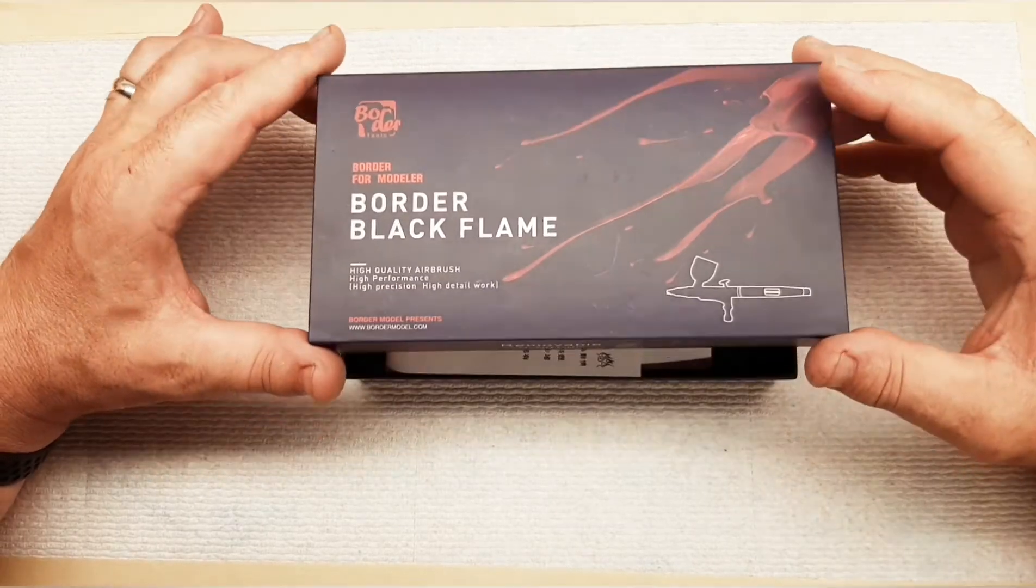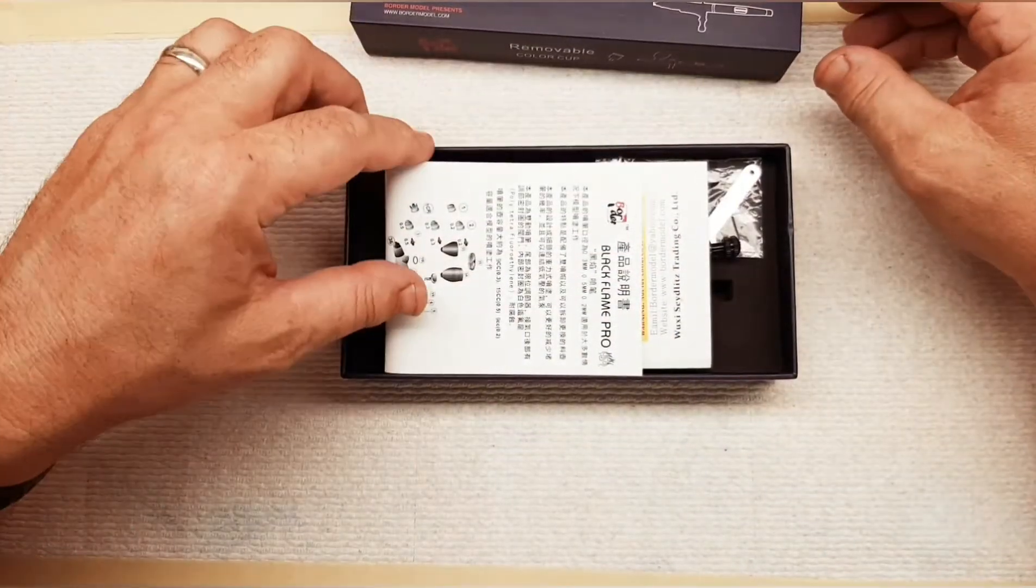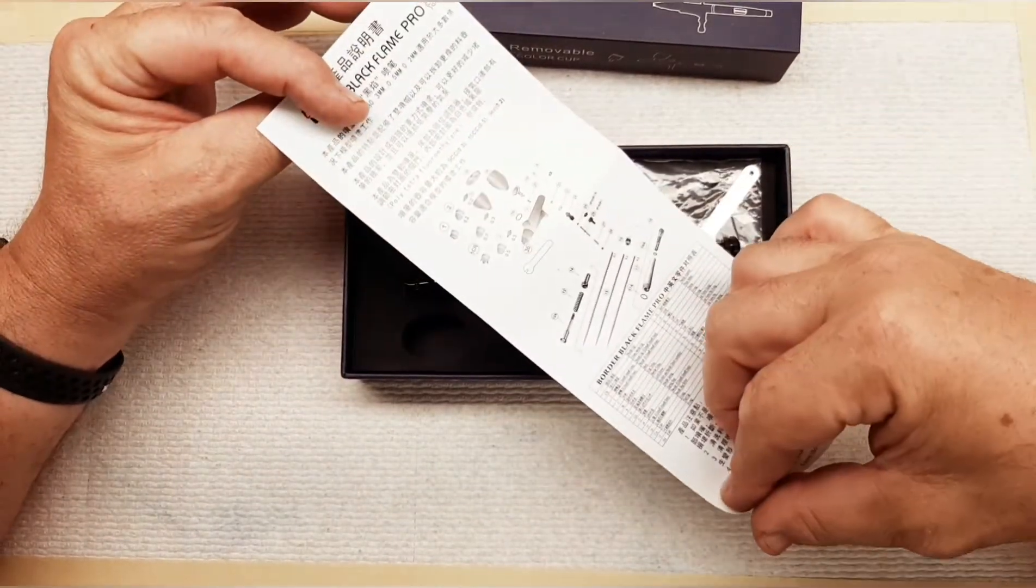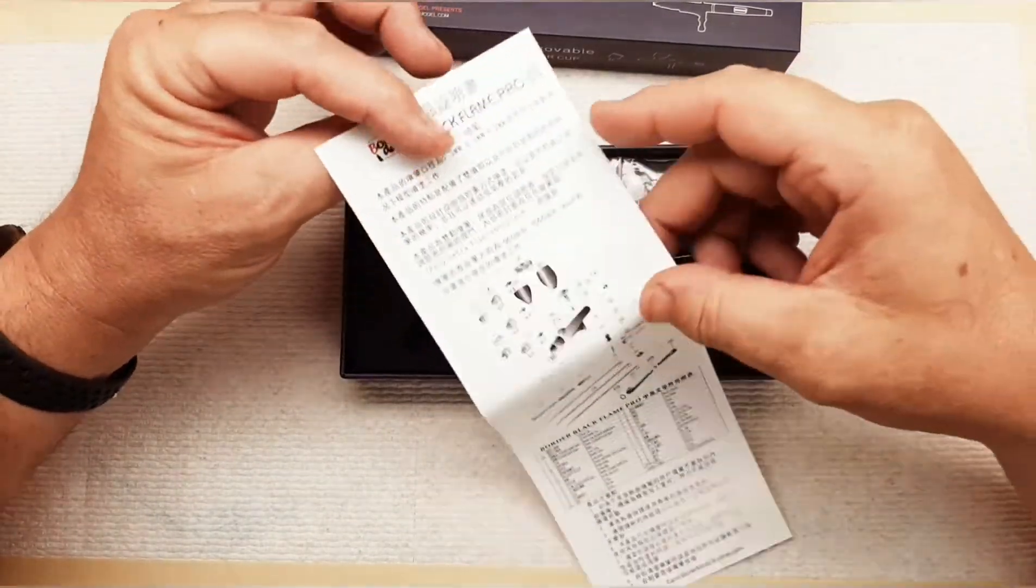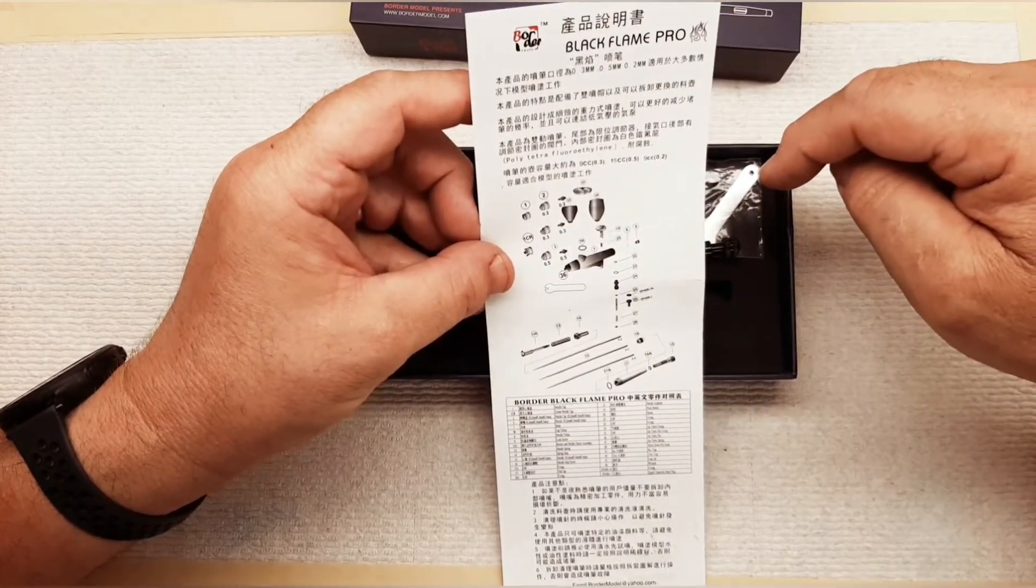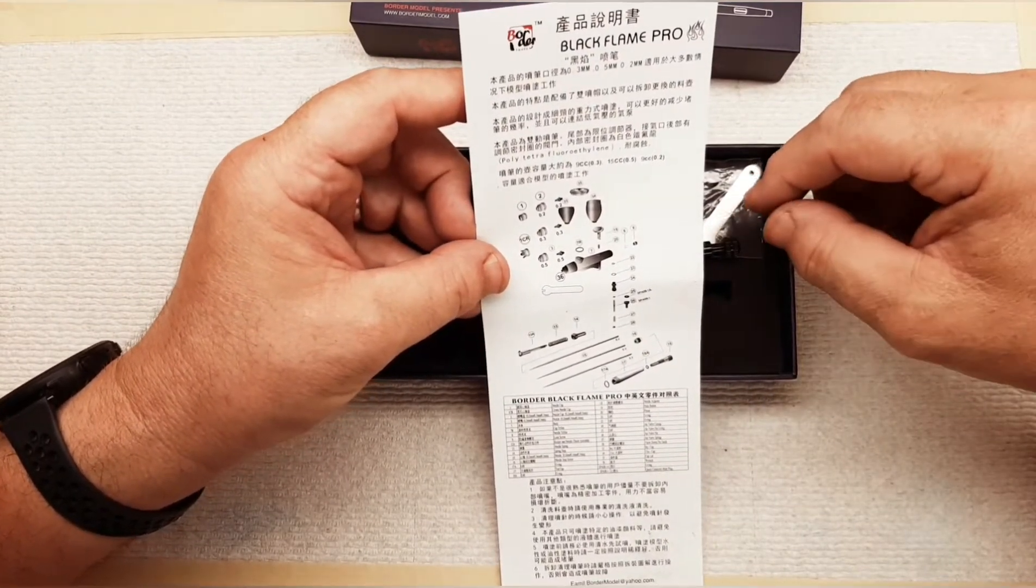It comes in a pretty heavy-duty box, no big deal there. Instructions are very limited and have a lot of translation errors. They do give you a nice schematic on the parts itself, which a lot of other airbrushes don't necessarily have.